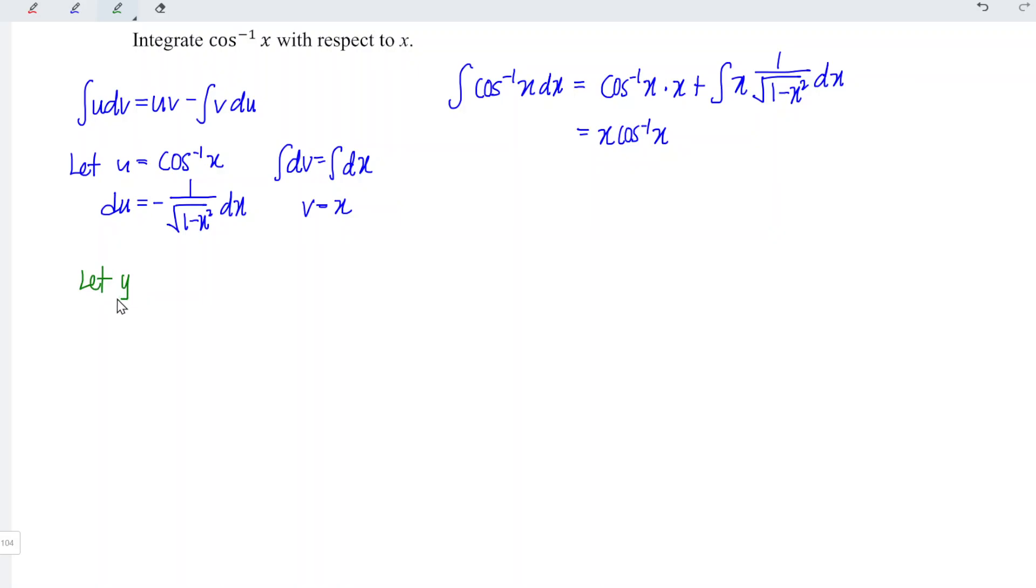Let y be equal to 1 minus x square. When we differentiate y with respect to x, we should obtain, differentiate 1 is 0, differentiate negative x square is negative 2x. Rewrite, we obtain dx is equal to dy over minus 2x.